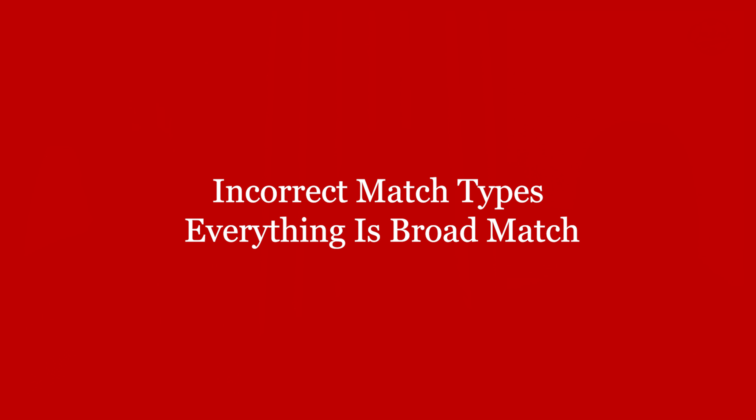Mistake number three: incorrect match types — everything is set to broad match. Google has three types of match types: broad, phrase, and exact. They all target differently, but if you've got everything as broad match, you're basically telling Google you want everything to do with a term. You can end up with a lot of irrelevant searches coming through and you're wasting money on the wrong audience. Occasionally using broad match isn't terrible, but making sure you use phrase and exact more frequently will get you better results.